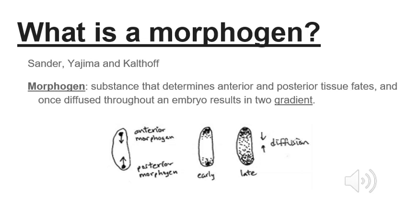It was concluded through studies that the anterior portion of the embryos only gave rise to anterior structures, while the posterior portion only to posterior structures, and not vice versa. With this finding, Sander concluded the presence of morphogens. Morphogens are substances that specify the tissue fates of the posterior and anterior portions. These morphogens then diffuse through the syncytial blastoderm, forming two gradients.